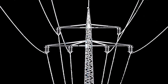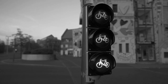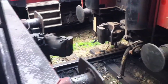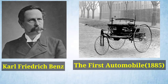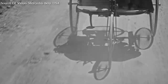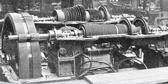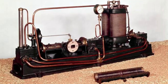इस समय में कुछ महत्वपूर्ण Inventions भी हुए जैसे Electricity, Electric Light, Automatic Signals, Telephone, Typewriter और Knuckle Couplers जो Train Coaches को जोड़ने में इस्तेमाल किये जाते हैं। इसी समय में Automobile Industry का जन्म हुआ जब Karl Benz द्वारा 1885 में दुनिया की पहली Automobile का आविष्कार किया गया। Steam Turbine भी एक महत्वपूर्ण Invention था जो 1884 में Sir Charles Parsons द्वारा विकसित किया गया, जिसे Dynamo से Connect करके 7.5 Kilowatt Electricity उत्पन्न की गई।